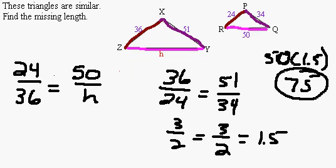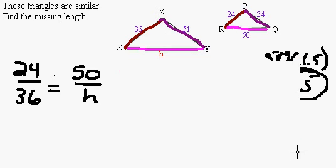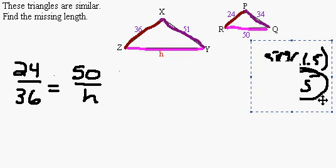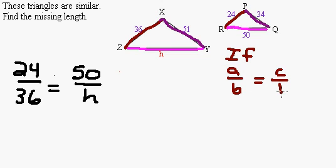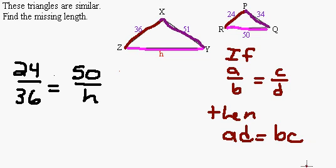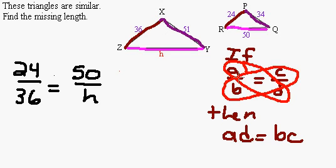A proportion is when a fraction equals a fraction, and one characteristic of proportions is that you can cross multiply. Here's that property: if a over b equals c over d, then a times d equals b times c. That will always be true — the product of the diagonals across from each other will always be equal if you have two fractions that are equal.